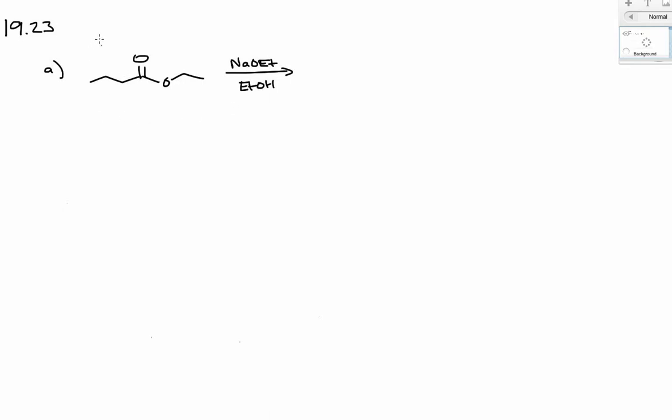Let's name our major functional group in our starting material. The side chain here is an ethyl group. So this is an ethyl butanoate.